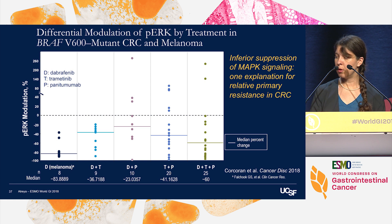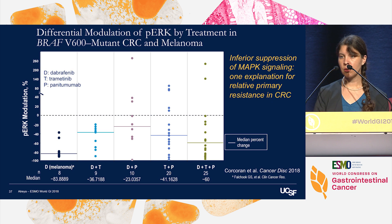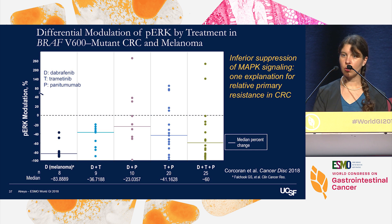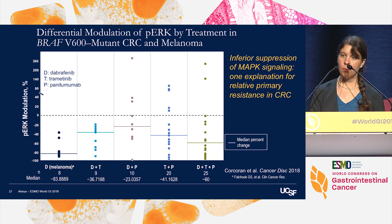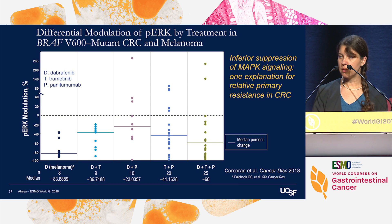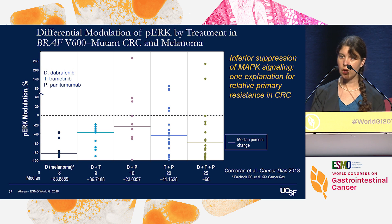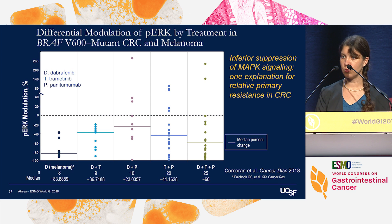This may explain the relative resistance in colorectal cancer as compared to melanoma. Pictured here is the change in phospho-ERK levels by immunohistochemistry in tumor biopsies pre-treatment versus at day 14 on treatment. Patients with melanoma treated with dabrafenib alone had superior suppression of phospho-ERK compared to patients with colorectal cancer, or even those at the far right treated with the triplet therapy of dabrafenib, trametinib, and panitumumab.